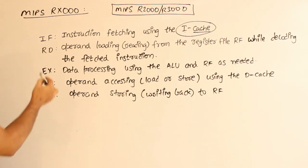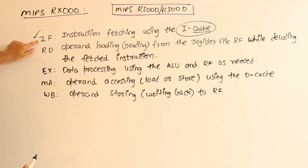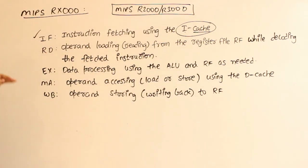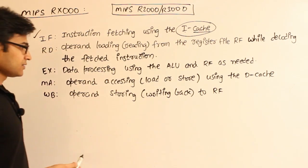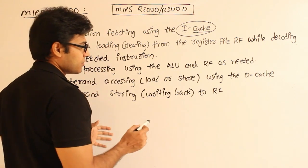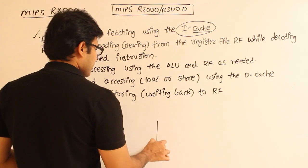The RD phase performs operand loading from the register file while decoding the fetched instruction. Once you fetch the instruction, the next phase involves instruction decoding along with operand loading. To fully understand this you'd need to know the microprocessor architecture, but since it's not in the syllabus, I'll keep it brief. What you need to understand is that we have an ALU — arithmetic logic unit.